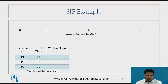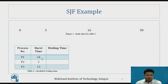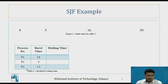Let's see the example. The table has P1 with burst time 24, P2 with burst time 3, and P3 with burst time 13. We need to calculate the average waiting time. Based on SJF, we need to find the process with the shortest burst time.